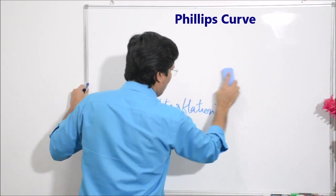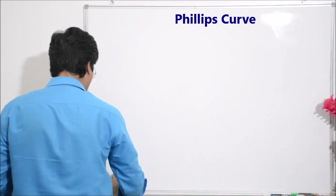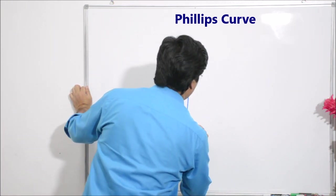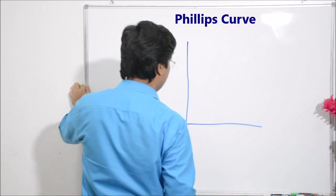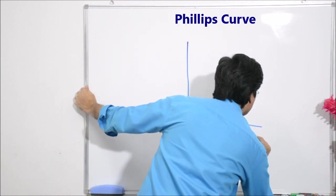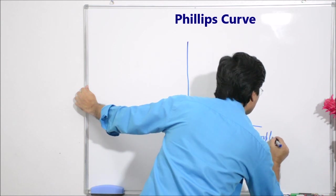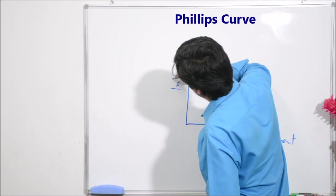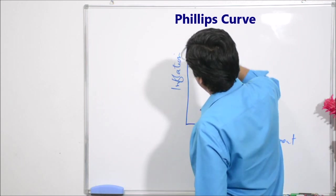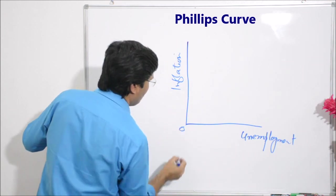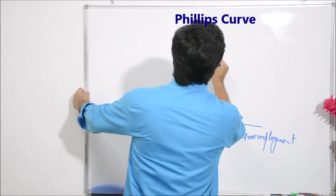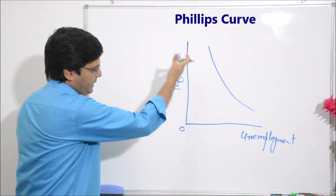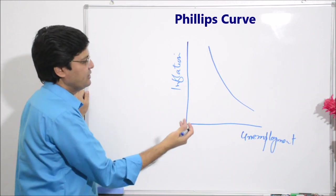Now, simply this curve is an inverse curve — we will draw it. Here on the x-axis is unemployment, and on the y-axis is inflation. It shows a downward slope, and you can see this inverse relationship between the two variables.